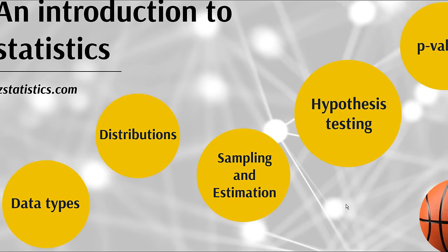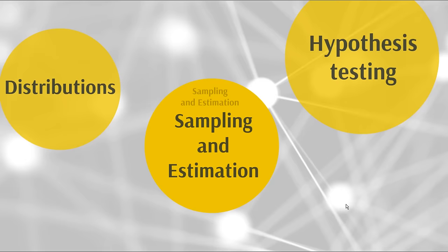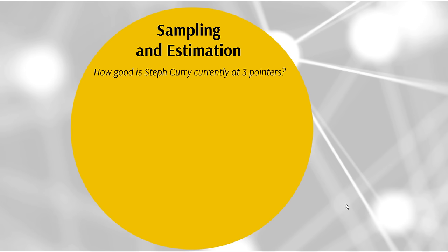This is important in statistics because every study ever conducted starts with a sample. You take a sample, then make an inference using that sample. The distribution of sample means becomes a lot skinnier — in other words, the variance of our statistic is reduced. That takes us to sampling and estimation. The question is: how good is Steph Curry at three-pointers? In 2018-19, he's shot 128 threes and nailed 61 of them — that's 0.4766. This is actually a sample statistic.